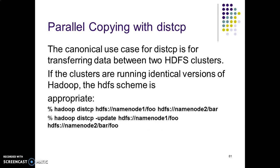That covers the coherency model. Now let's look at parallel copying with distcp. We need parallel copying because there is a lot of replication in HDFS when writing data. Copying one system at a time takes a lot of time, so it is better to use parallel copying for multiple replicas inside HDFS clusters. Whenever there is data transfer between two HDFS clusters, we use the `distcp` command, which makes file replication much faster than conventional copying.